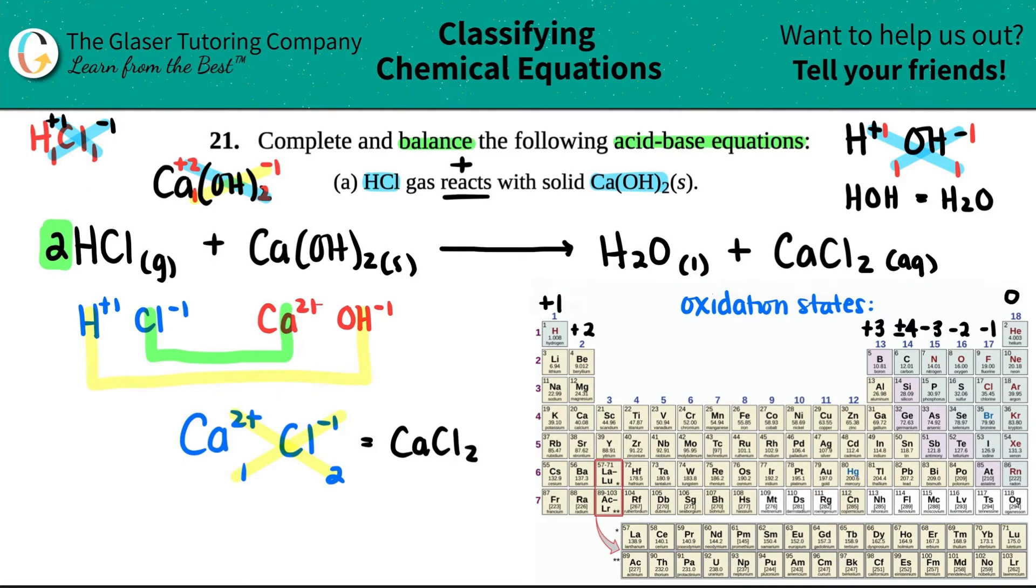Two times one would be two chlorines. But now that changes the ball game. I have now two hydrogens here plus two hydrogens here. So I have a total of four hydrogens. I only have two hydrogens here. So if I want to get a total of four, what would I put in front of this hydrogen? Yeah, I would put a two as well. Two times two is four. Two plus two is four.